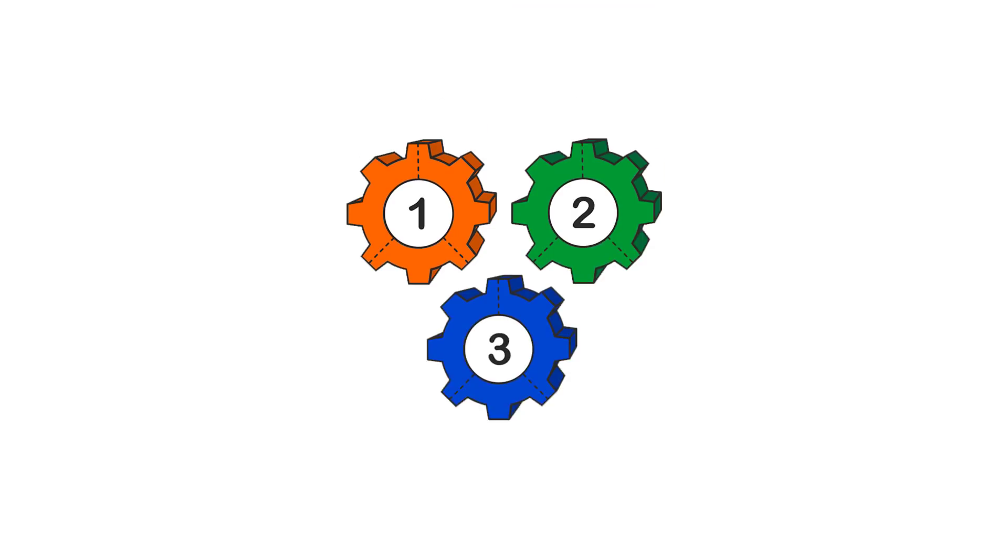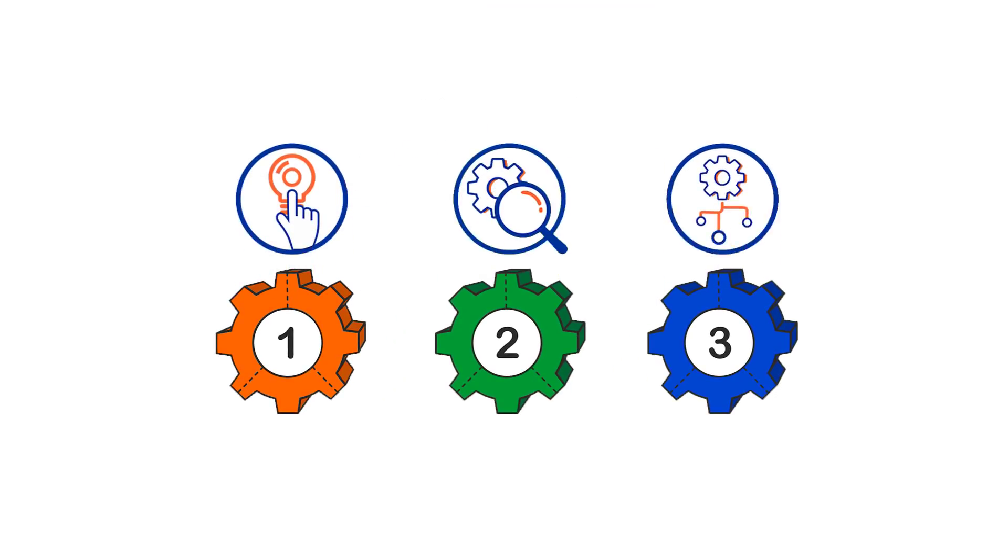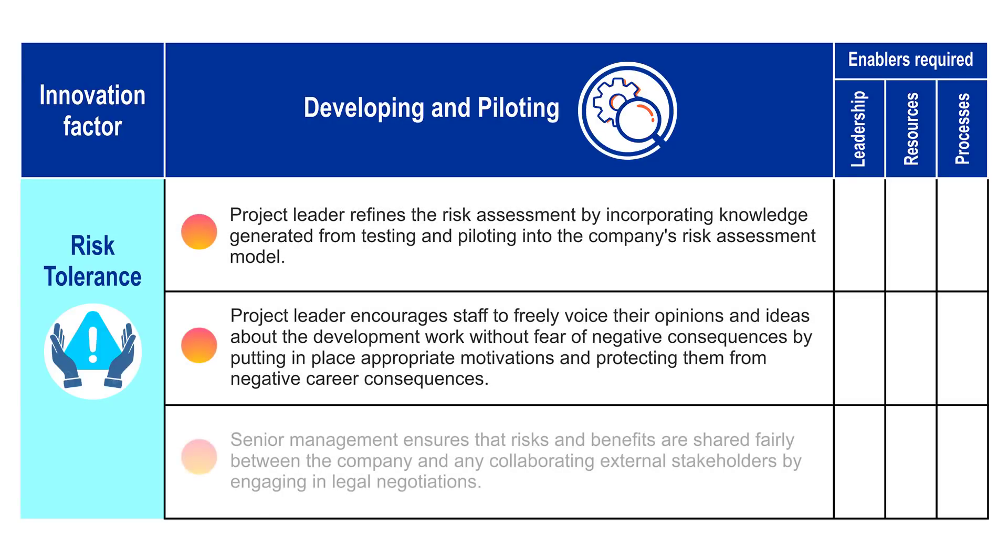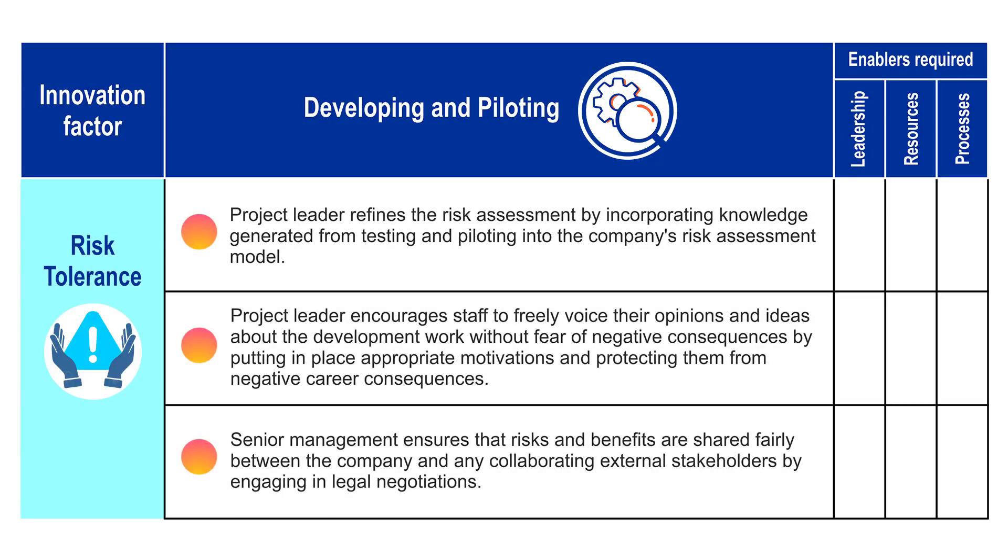For example, in phase two, developing and piloting, three practices are suggested to support the innovation factor of risk tolerance. The last three columns, enablers required, show that these practices require support from either leadership, resources and/or processes.